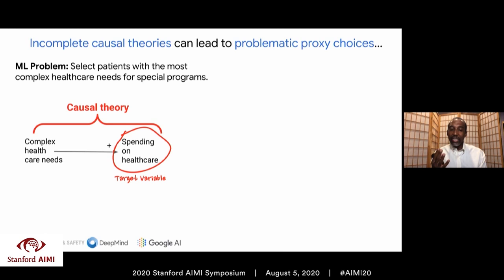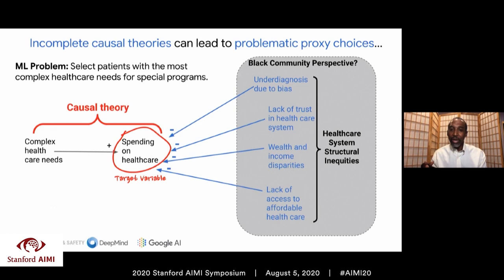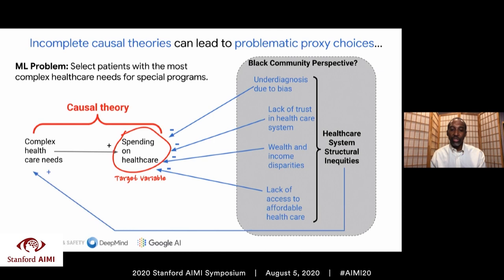The engineers made the causal assumption that complex healthcare needs would lead to increased spending on healthcare — that causal theory led to healthcare expenditure being chosen as the target variable. This was problematic because it excludes critical factors that impact how much African Americans spend on healthcare, independent of their healthcare needs. If the African American community had participated in formulating this causal theory, they would likely have identified key factors such as underdiagnosis due to bias, lack of trust in the healthcare system, wealth and income disparities, and lack of access to affordable healthcare — all factors that decrease spending independent of healthcare need, representing a subset of structural inequities that also increase complex healthcare need in the African American community.